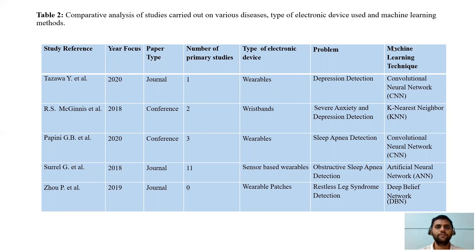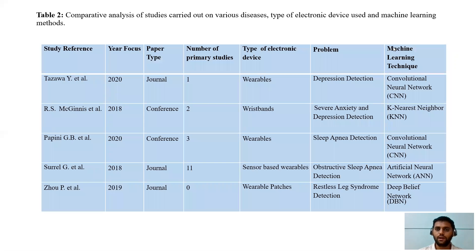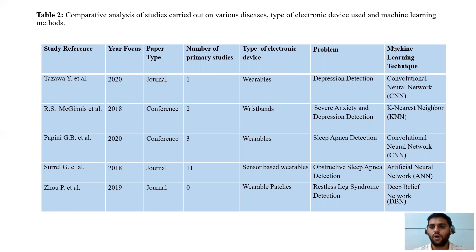In the second table, we study how different devices are used to detect problems like depression or severe anxiety. The types of electronic devices used are wristbands and wearables, which are full of miniature sensors, and sensor-based patches. Patches are like band aids which can be applied to the part of the body where the sensor has to measure readings related to that particular area. In this way, the WBAN body area networks work. The most prominent machine learning or deep learning techniques are K-nearest neighbor and convolutional neural network.